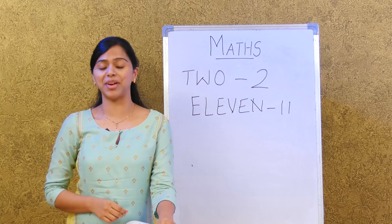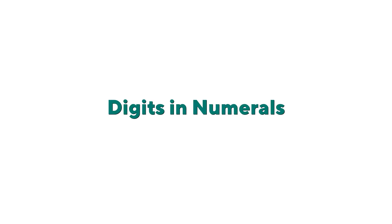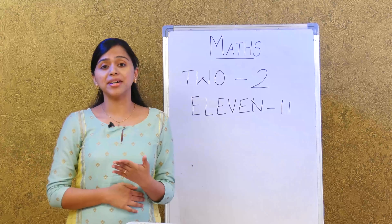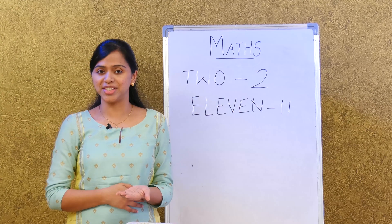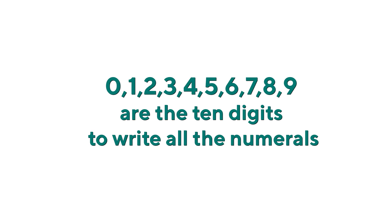I believe you remember all the number names very well. Now let us look at something new — numbers and digits. Numbers are made up of digits: 0, 1, 2, 3, 4, 5, 6, 7, 8, 9. These 10 digits are used for all numerals.